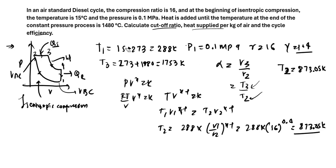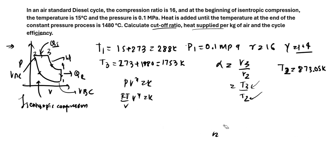Now we can move ahead because we can directly find alpha from here, which is T3, we have been given as 1753 divided by our value of T2 as 873.05, which comes out to be 2.01.